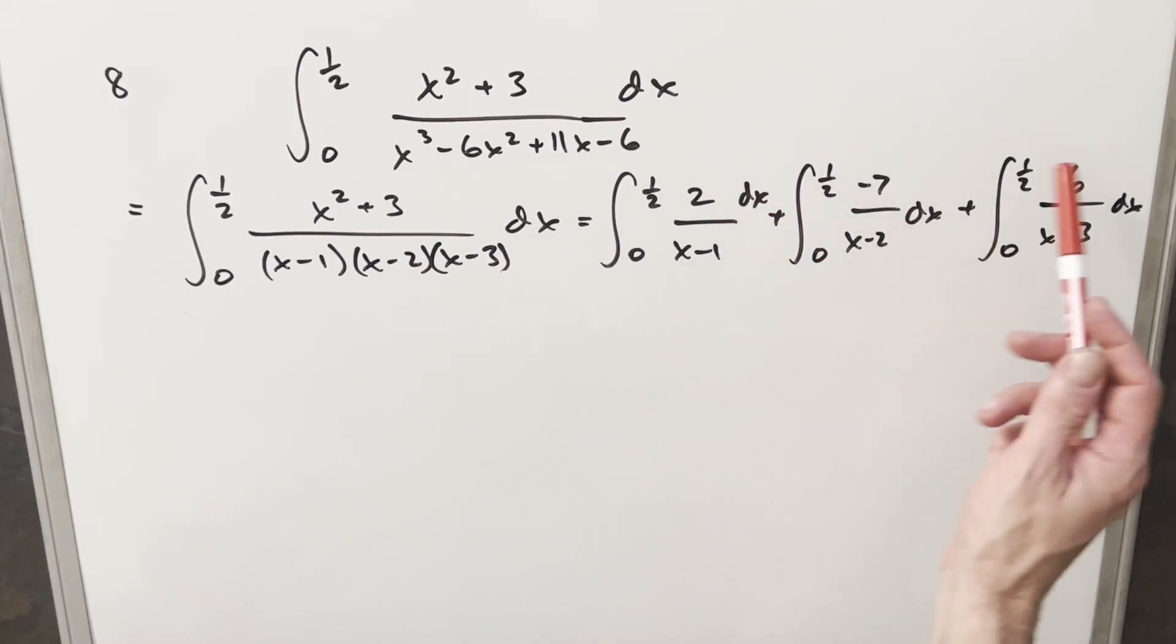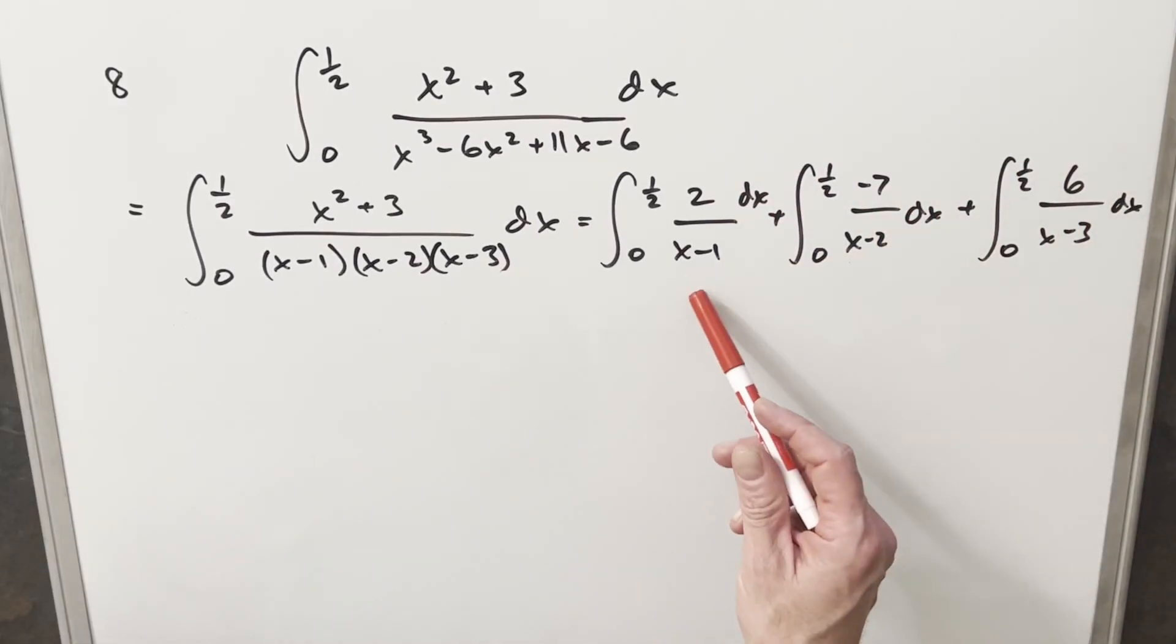Now at this point, we have our A, B, and C values that we found on the previous board. And what I did is I actually split this into three separate integrals, so we'll integrate these separately.